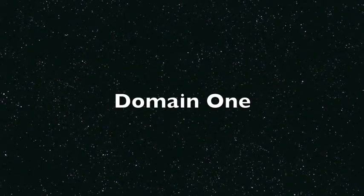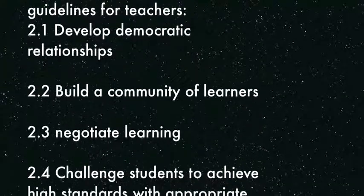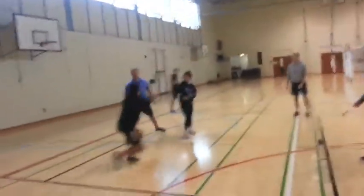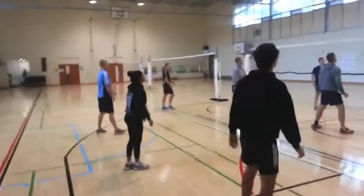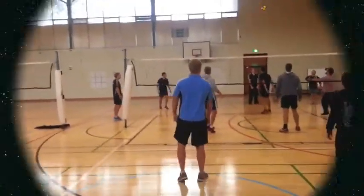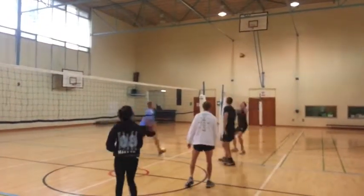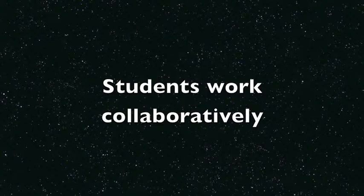Domain 1: Creating Safe Conditions for Rigorous Learning. Within this domain lie the guidelines for teachers: develop democratic relationships, build a community of learners, negotiate learning, and challenge students to achieve high standards with appropriate support. Examples of this domain within my teaching include students learning through gameplay where the emphasis is on succeeding as a team and developing skills. Small groups are also used to maximise participation and achieve improvement, and students work collaboratively to achieve the goals of each lesson.